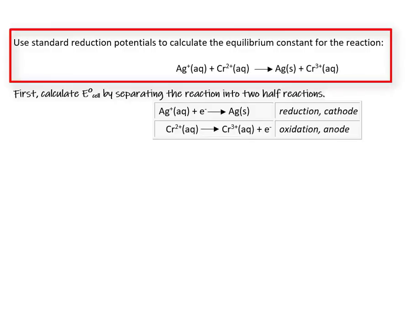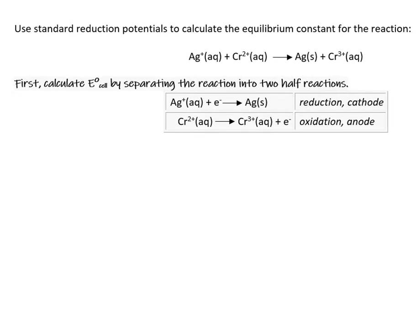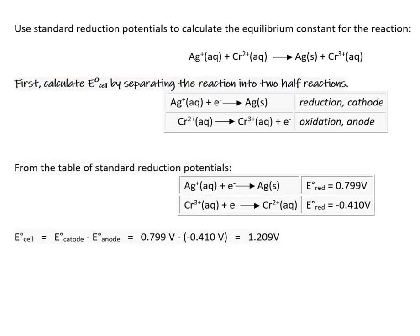We are asked to use standard reduction potentials to calculate the equilibrium constant for a redox reaction between silver ion and chromium 2+ ion. The first step is to calculate E°cell at standard conditions. We determine that E°cell at standard conditions is positive 1.209 volts.